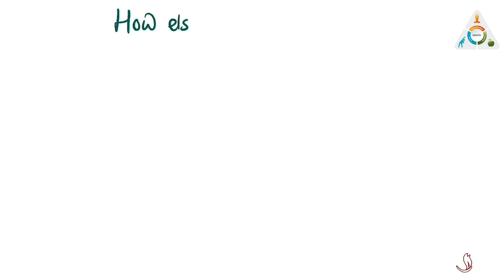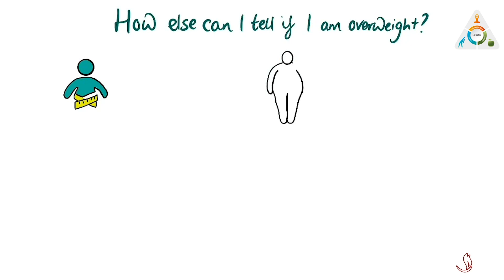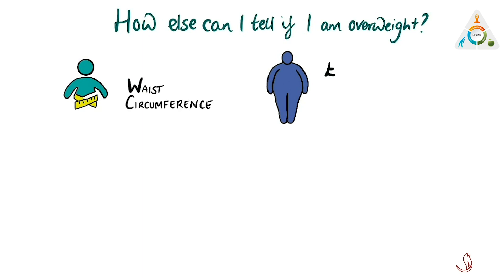You can have a healthy BMI and still have too much tummy fat, meaning you're still at risk of developing the diseases associated with obesity. Extra weight around your waist means fat can build up around organs like your liver and pancreas. This can affect a hormone called insulin, which can over time lead to diabetes.